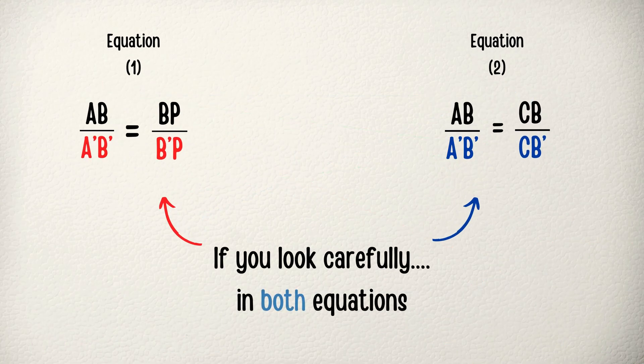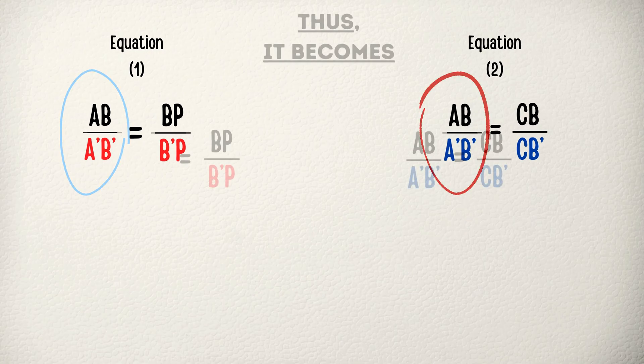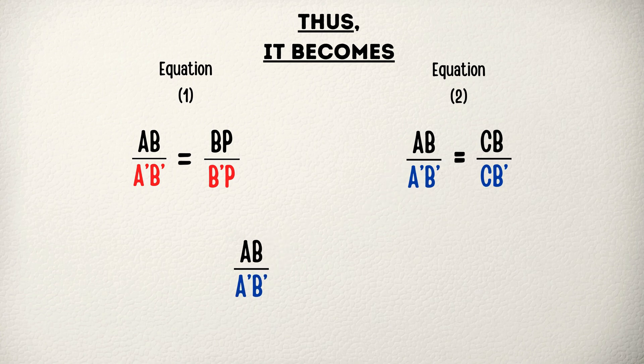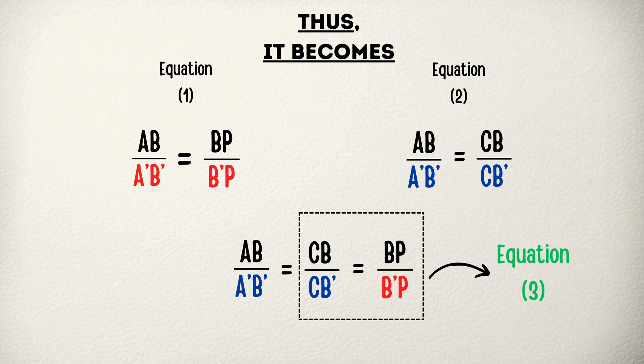If you compare equation 1 and equation 2, you'll notice the left side of both equations are same. It means the equation becomes AB divided by A'B' equals CB divided by CB' equals BP divided by B'P. We call this part equation number 3.